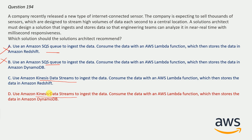Between option C and D, only D is correct because we want to store the data, and Redshift is a data warehousing service, not a data store service. Moreover, Lambda doesn't work with Redshift, so it would not be suitable here. DynamoDB is in option D, and Lambda works perfectly with DynamoDB, so option D is correct.